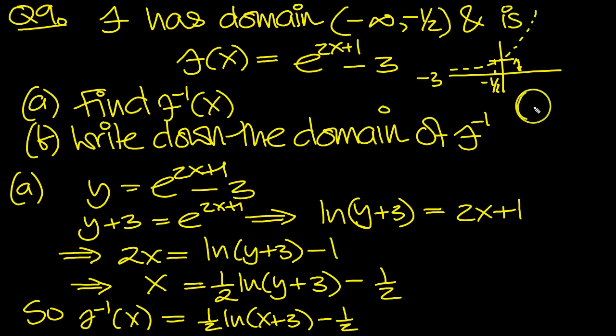So effectively the range of f then goes from minus 3, but doesn't touch minus 3, up to, and we said when you put minus 1 half in here, you get e to the 0, which is 1, take 3, which is minus 2. But it doesn't touch minus 2 because it doesn't touch minus 1 half.